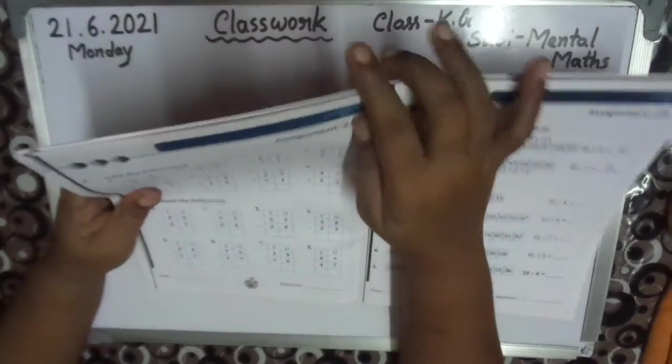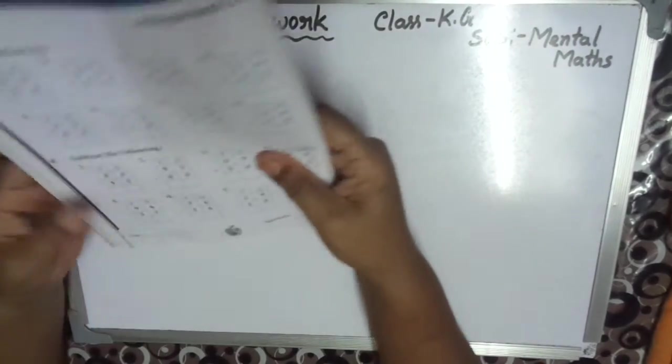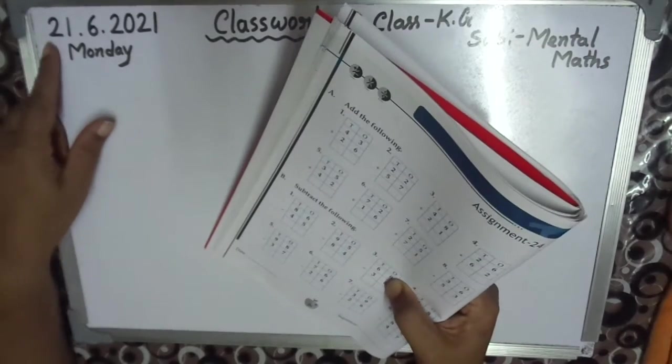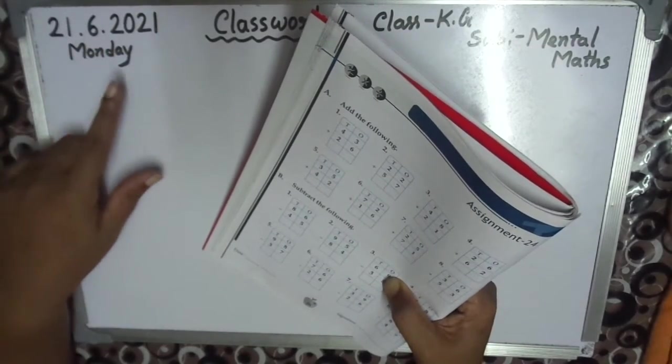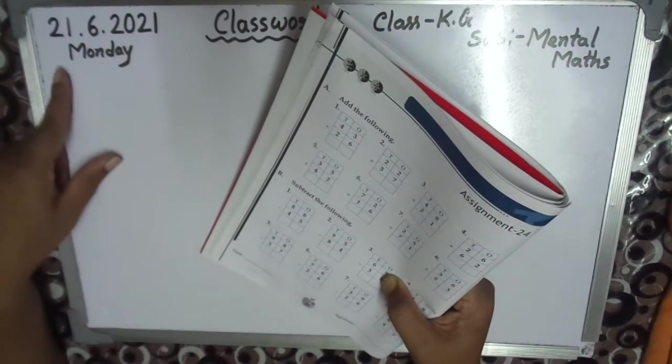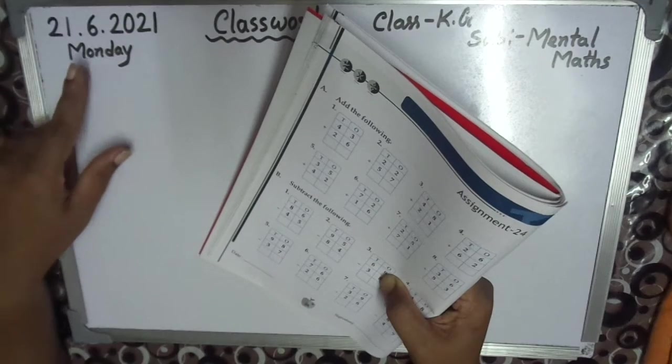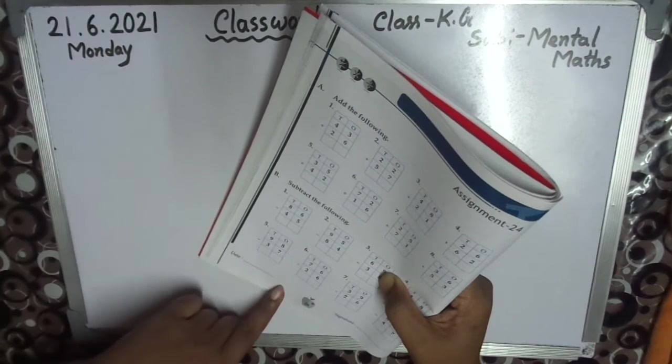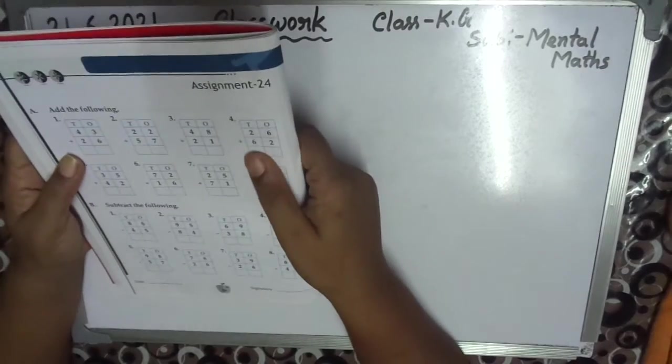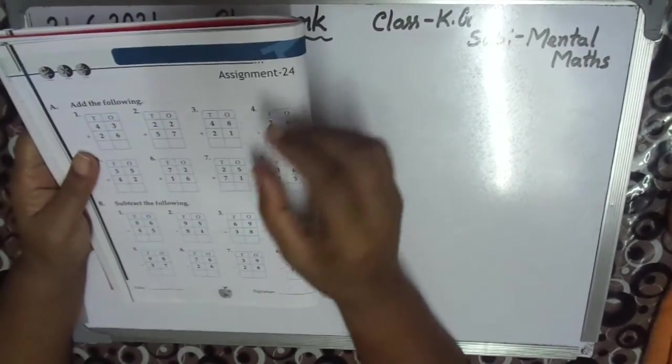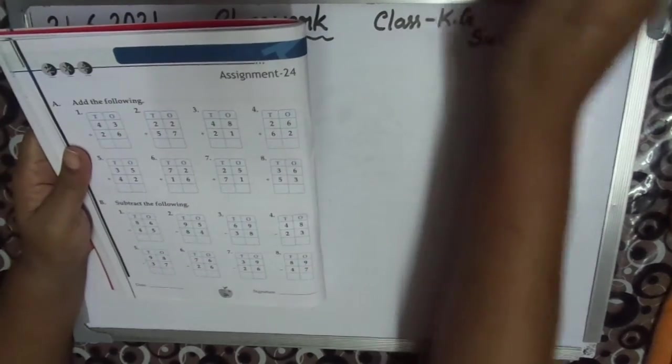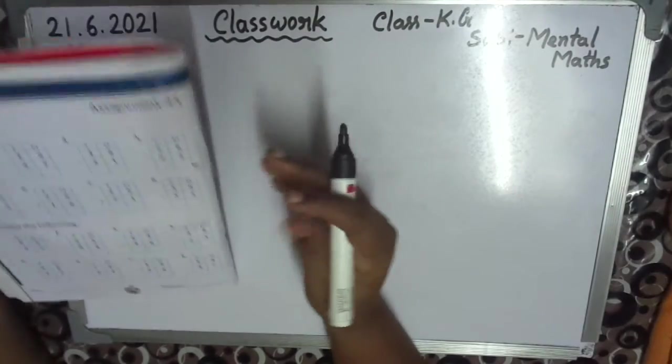See children, write here date 21-6. Today's date: 21-6-2021. Add the following everyone. Follow me.